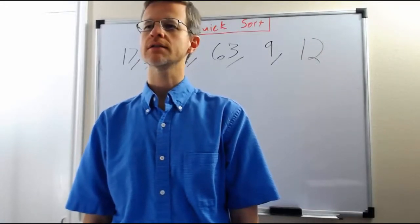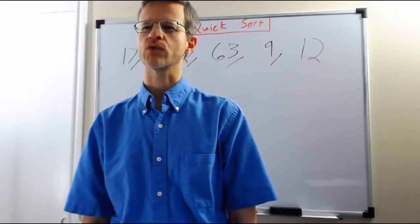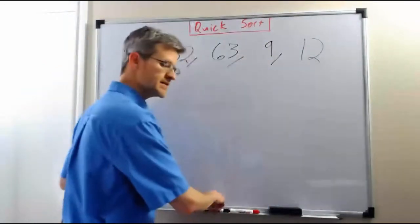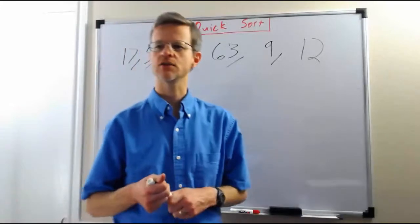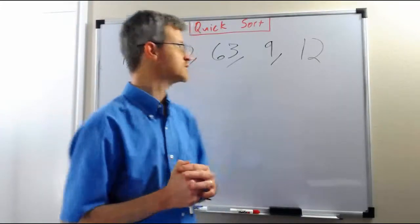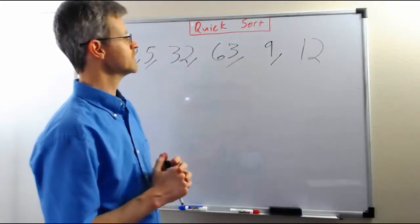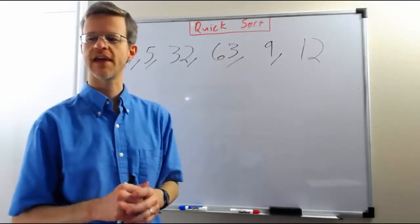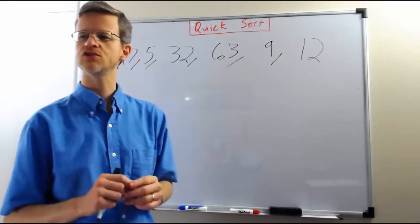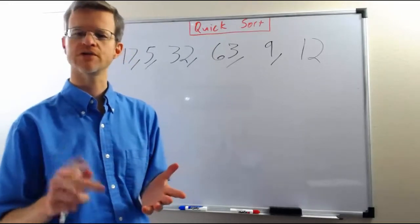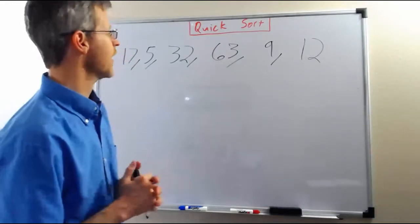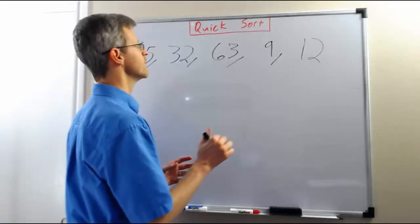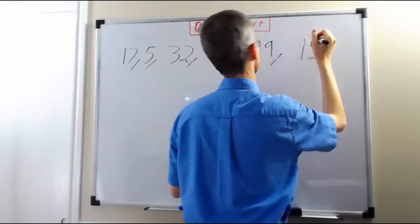This video describes the essence of quicksort. The basic idea is that we will divide a list into pieces that are sorted with respect to each other, until eventually the pieces get so small that they consist of individual data elements, which by definition are sorted. A list of length 1 is sorted because there is no way for it to be out of order.